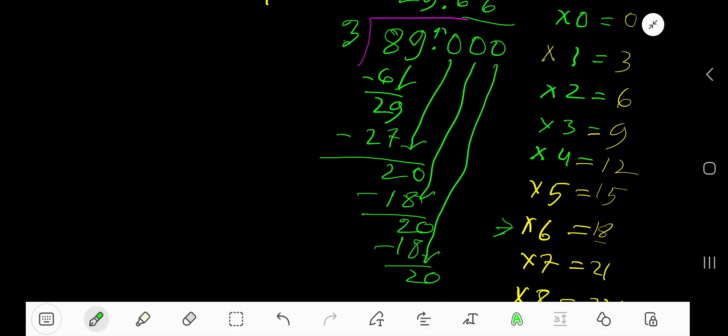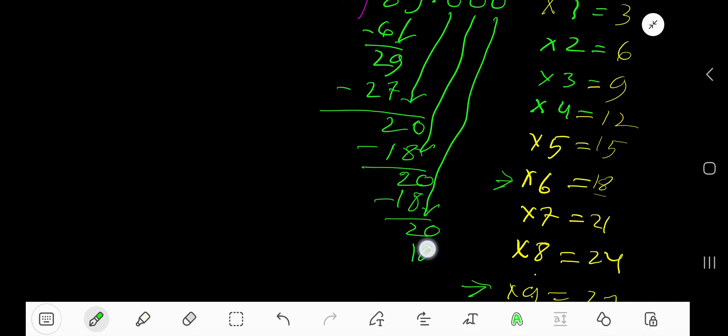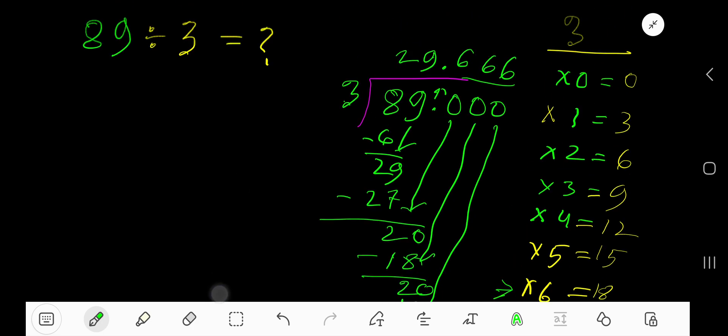3 goes into 20 again, 6 times. 18. Subtract. 2. This process is continuing.